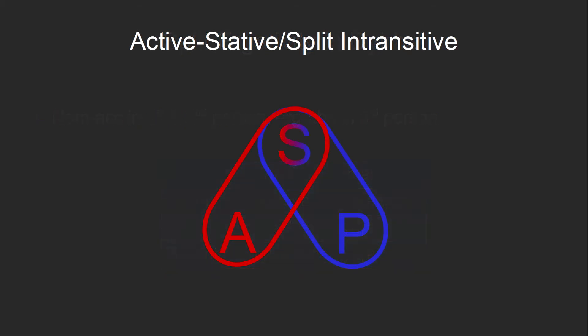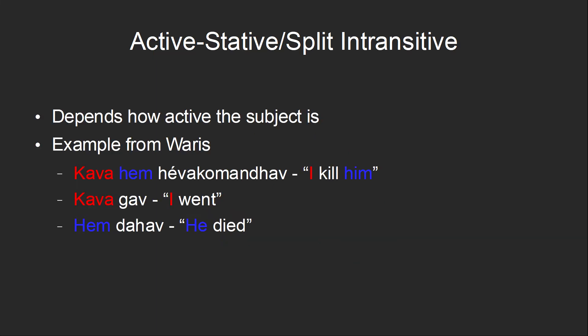Another possibility is to say that the subject is sometimes like an agent and sometimes like a patient. We call this active-stative alignment or split-intransitive alignment. In a split-intransitive language, some intransitive verbs will take an argument with an agent marker, and some will take an argument with a patient marker, depending on whether the subject acts in an agent-like manner or a patient-like manner.